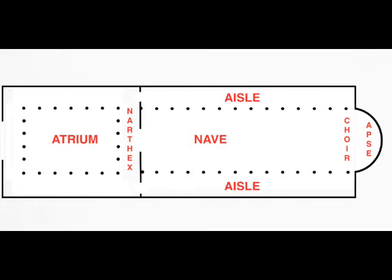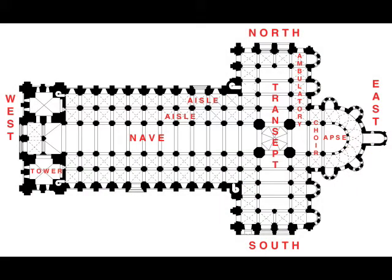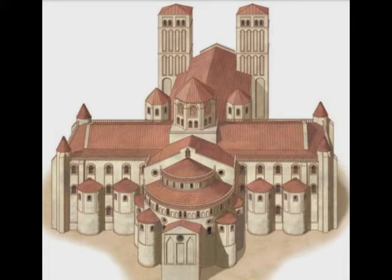But a typical Romanesque pilgrimage church has several modifications. At the eastern end in front of the choir there is a transept, a space that continues beyond the north and south walls, giving the church plan the shape of a Latin cross. The transept crossing — the space where the transept meets the nave and choir — is shown here as four black octagons arranged in a square. A high tower is usually built over the transept crossing. Chapels can be added to the transept arms, especially on the eastern side.